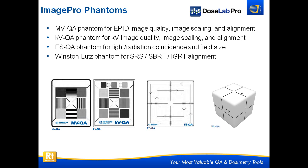We also have a Winston-Lutz Phantom for SRS, SBRT, or IGRT alignment. The cube has an embedded tungsten sphere in it. You can use it as a normal Winston-Lutz phantom, or you can do a CT scan of it, treat it just like a patient, pull it into your planning system, contour the ball as your tumor, and put that on your table to do a full cone beam CT. Using the offset alignment marks, you can align it in the room, have your cone beam CT system bring the ball to isocenter, then take two MV images to do a Winston-Lutz test — giving you complete end-to-end accuracy for how accurate you are positioning your SRS or SBRT patients.